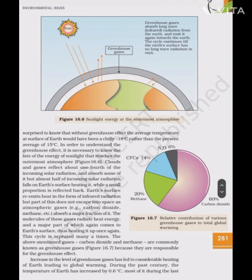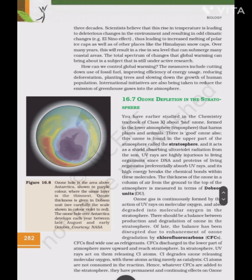How can we control global warming? Measures include cutting down use of fossil fuels, improving efficiency of energy usage, reducing deforestation, planting trees and slowing down the growth of human population. International initiatives are also being taken to reduce the emission of greenhouse gases into the atmosphere.